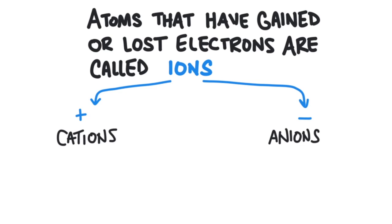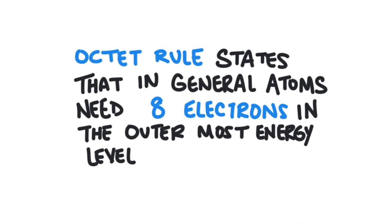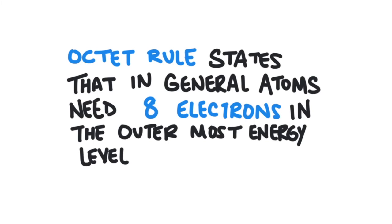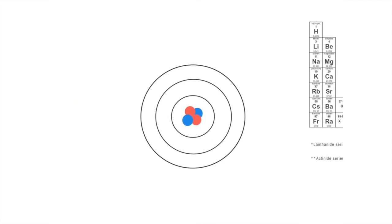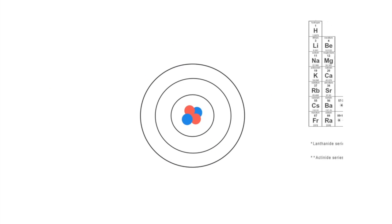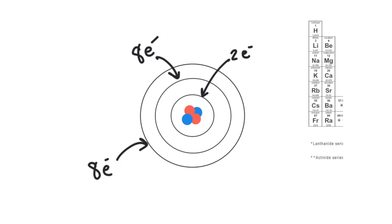So why would an atom lose or gain electrons? They're trying to obey the octet rule. This is a rule that states, in general, atoms want to have eight electrons in their outermost energy level — the outermost ring in Bohr's diagram. Electrons move around the nucleus in certain allowed energy levels, and it works like the steps of a ladder. Electrons cannot exist between energy levels; they have to be on one of those energy levels. The first energy level can hold a maximum of two electrons, and then each energy level after that can hold eight electrons.